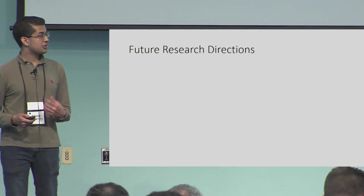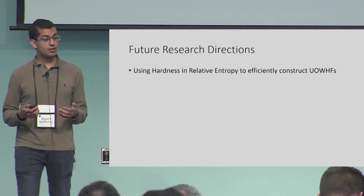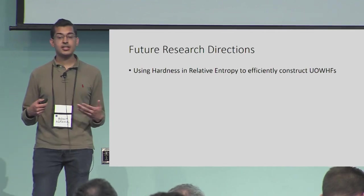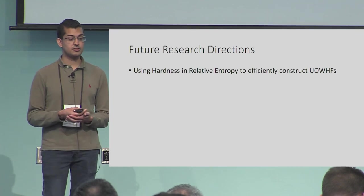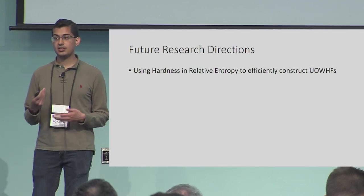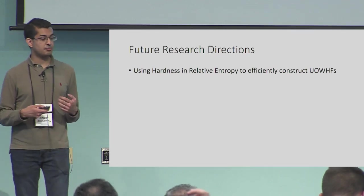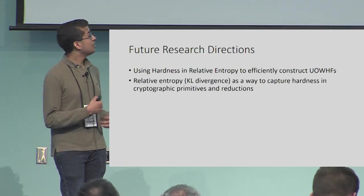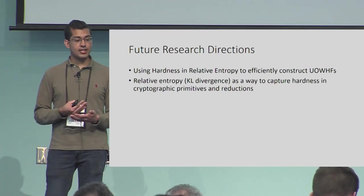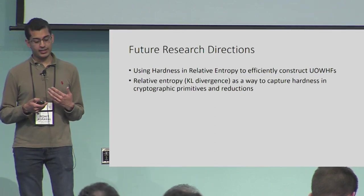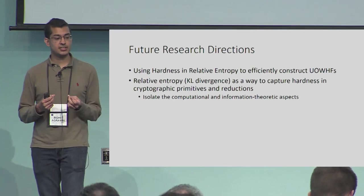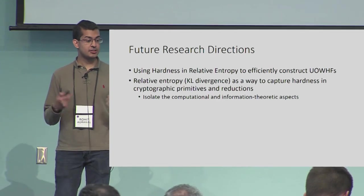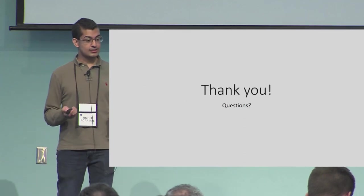To conclude with some future research directions: the bottom layer of primitives from the beginning also included universal one-way hash functions. It would be nice to use this notion, or something like it, to also get more efficient constructions of UOWHFs. In fact, the best known constructions of UOWHFs do go by some slightly different notion of inaccessible entropy, so there's hope this may also be unified. More broadly, the key idea here is using relative entropy or KL divergence for information-theoretic notions as a way to capture hardness in cryptographic primitives and reductions — in a way that's very simple and isolates the computational and information-theoretic parts of these reductions. I hope this may be useful in cryptography, and with that I'll conclude the talk. Thank you.